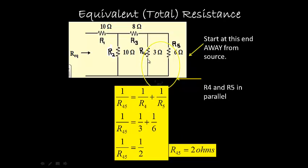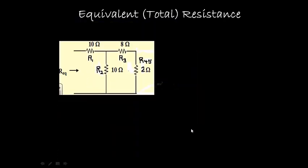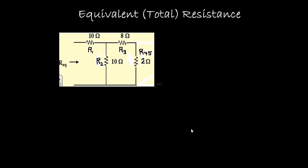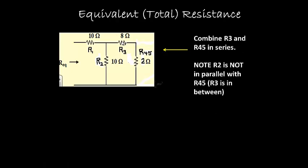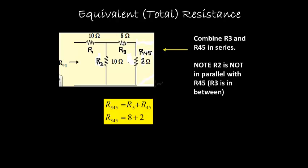Now what we could do is we could redraw the circuit and replace that with one resistor of 2 ohms, which we're doing on this slide. Now we take a look at R45 and say what's closest to it. Not R2. Don't make that mistake. The one closest to it is R3. So are they in series or parallel? They're in series. So we use our series formula. We combine them together and we get 10 ohms.